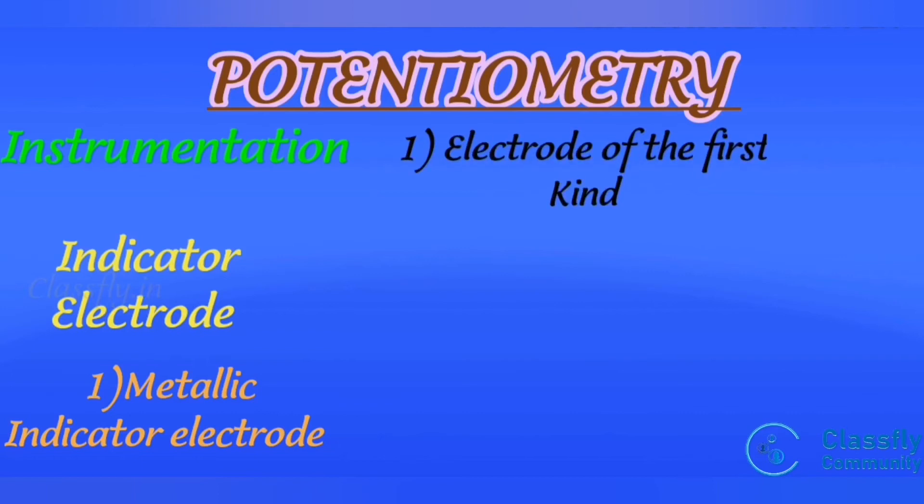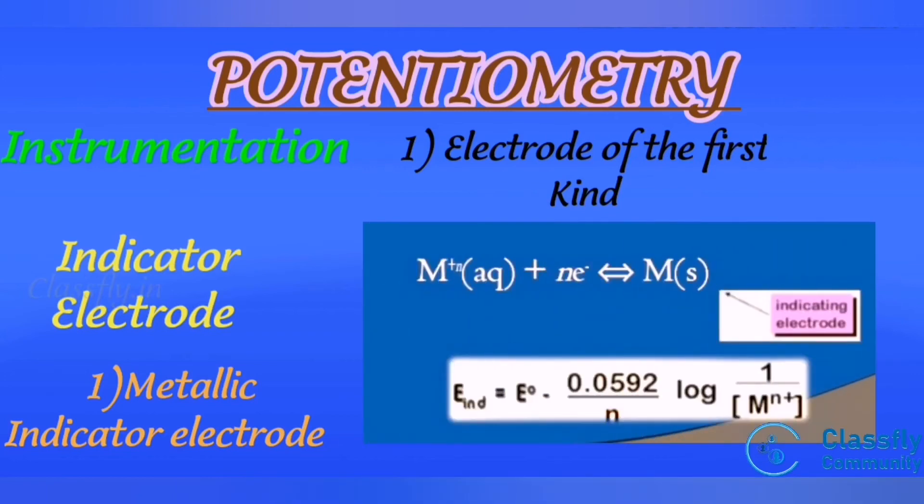Pure metal electrode in direct equilibrium with its cation. The metal is in contact with a solution containing its cation, that is Mn+ in case solution plus n electrons gives M in solid state.